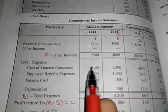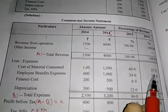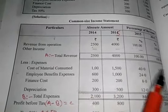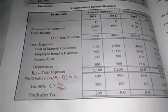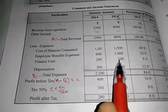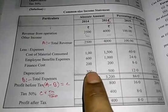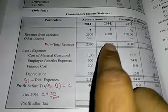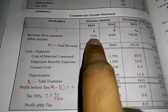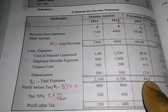Cost of material consumed: 1,000 divided by 2,500 into 100 is 40%; 1,500 divided by 4,000 into 100 is 37.5%. Employee benefit expense: 600 divided by 2,500 into 100 is 24%; 1,000 divided by 4,000 is 25%. Finance cost: 200 divided by 2,500 into 100 is 8%; 200 divided by 4,000 is 5%. Total expenses: 2,100 divided by 2,500 is 84%. For all items, we take revenue from operations as the base to get the common size income statement.